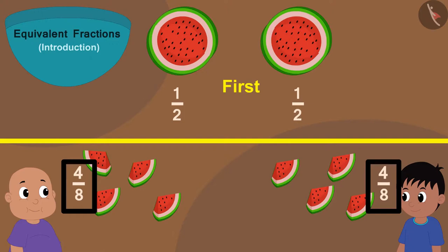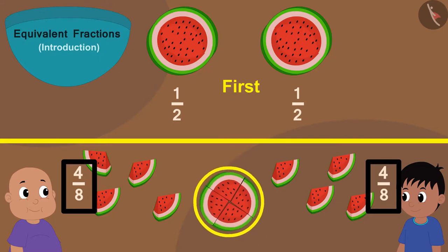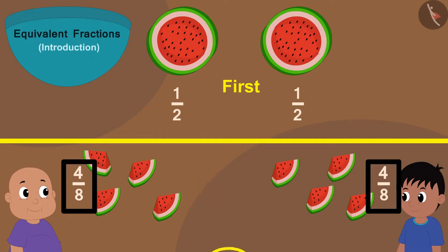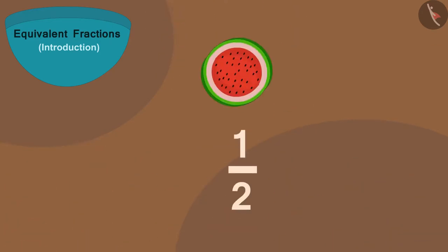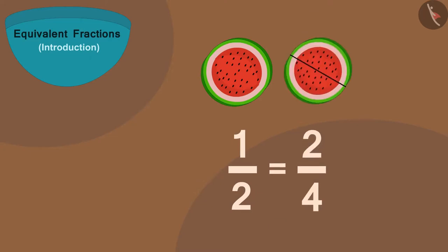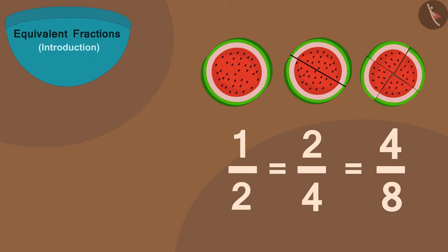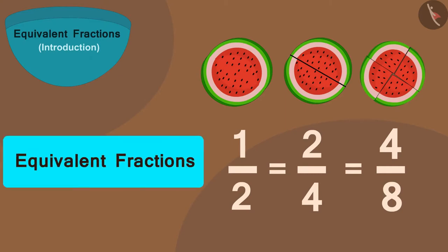If you look closely, you will find that they are still getting half of the watermelon. So, we can write the fraction one by two is equal to the fraction two by four is equal to the fraction four by eight. All of these are equivalent fractions.